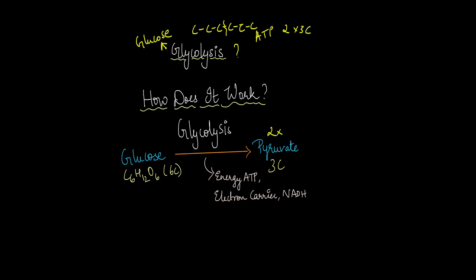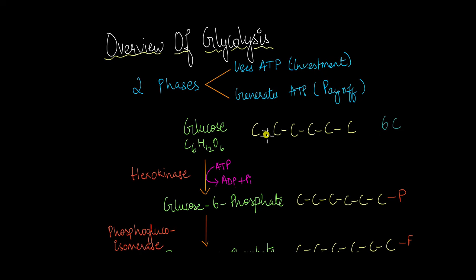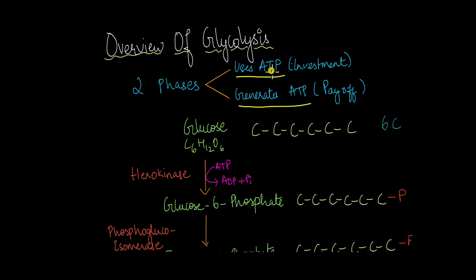In this video we are going to take a look at the overview of glycolysis and the enzymes involved in the process. There are two phases in glycolysis. The first phase is an investment phase where ATP is utilized, and the next phase is the payoff phase where ATP is generated. Because we use some ATP to generate more ATP, there is always a net amount of ATP produced. We will calculate that at the end of the video.